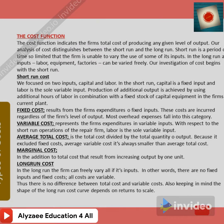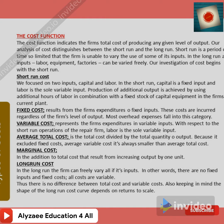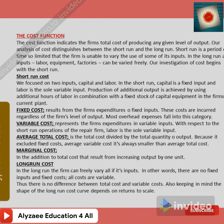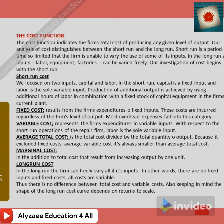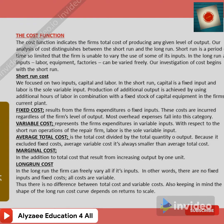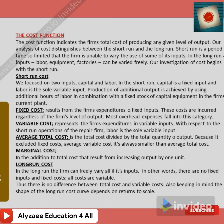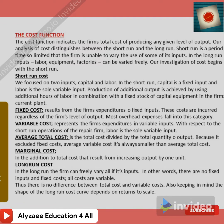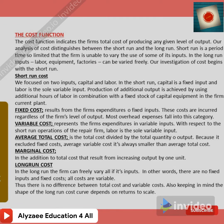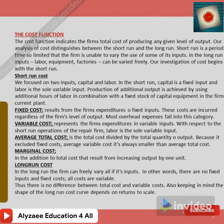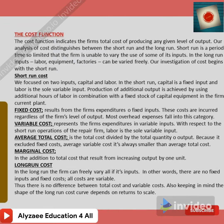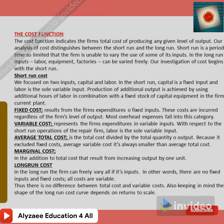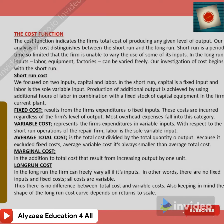Average total cost is total cost divided by the total quantity of output. Marginal cost is the additional cost that results from increasing output by one unit — for example, if producing 10,000 units costs a certain amount and producing 12,000 units costs more, the extra cost per additional unit is the marginal cost.